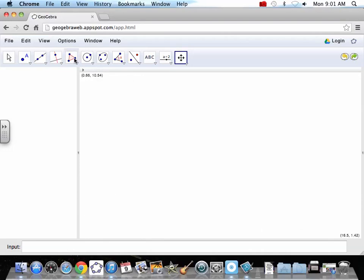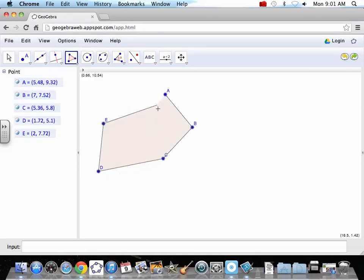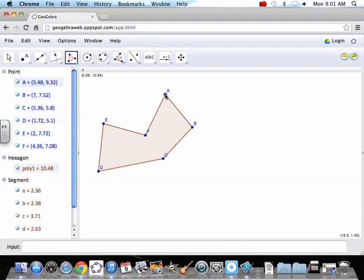And so we're going to do a reflection. So let's draw a polygon. Again, don't do a regular polygon. Do something that's got some obtuse angles, some acute angles, a little twist to them.